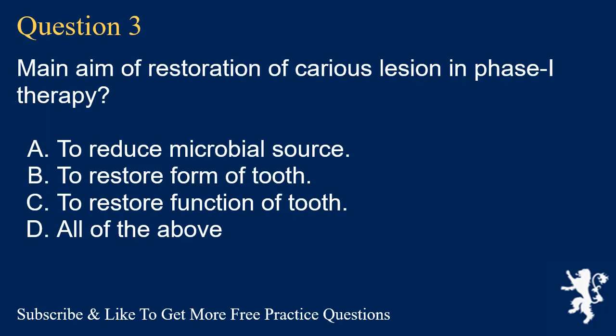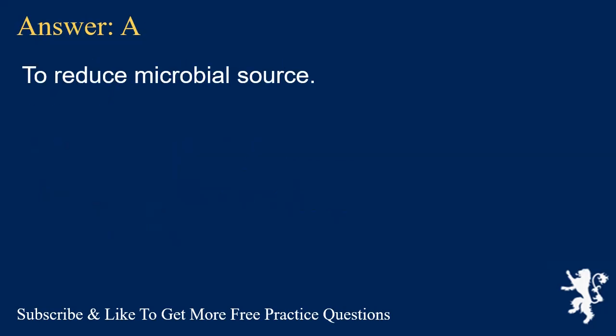Question 3. Main aim of restoration of carious lesion in phase I therapy? A. To reduce microbial source. B. To restore form of tooth. C. To restore function of tooth. D. All of the above. Answer: A. To reduce microbial source.